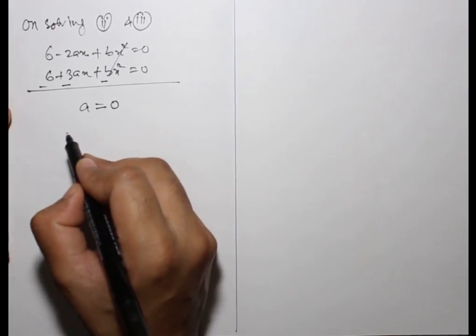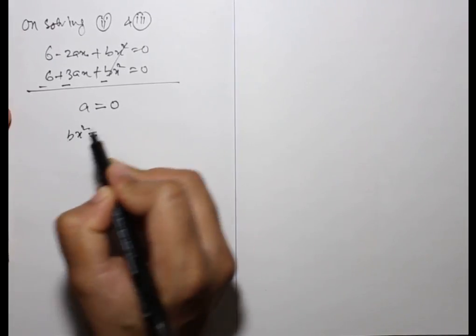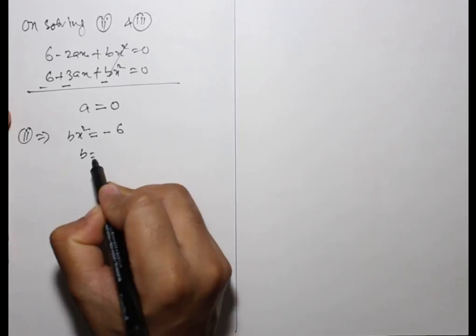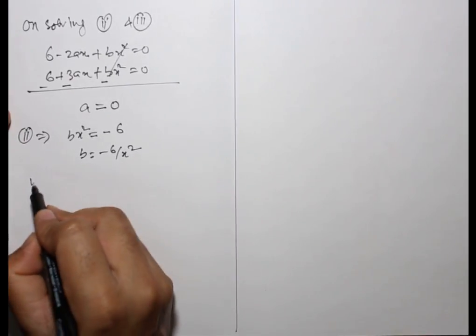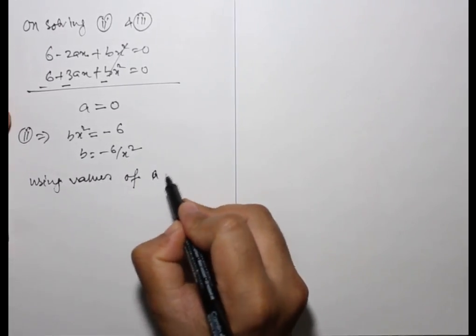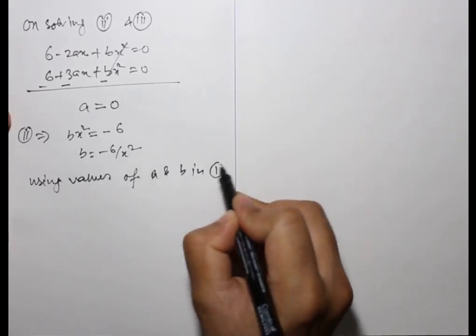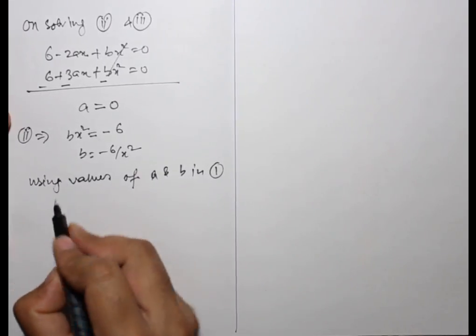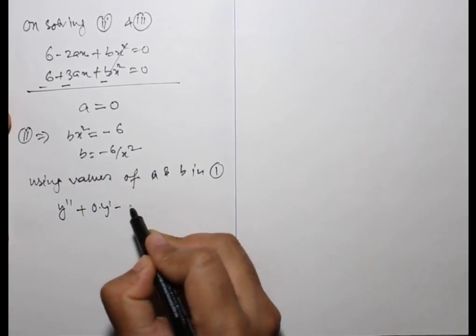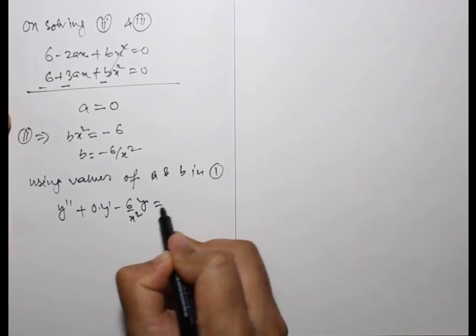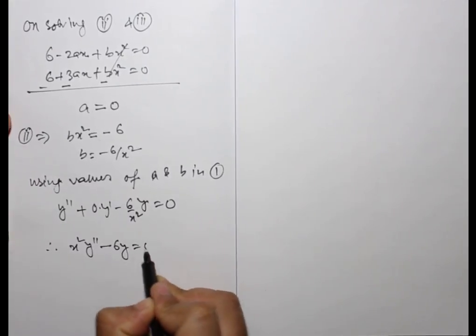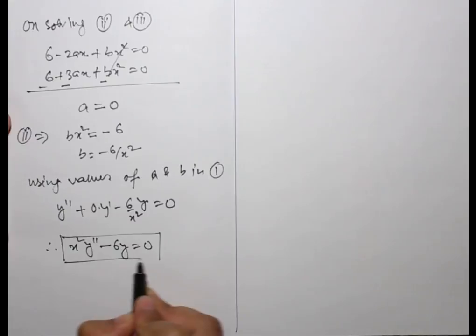Solving the system, we get b = -6/x² — but comparing coefficients properly gives a = 0 and b = -6/x². Using values of a and b in equation 1: y'' + 0·y' - (6/x²)·y = 0, therefore x²·y'' - 6y = 0. This is the required differential equation.